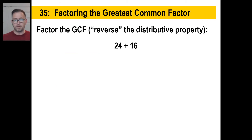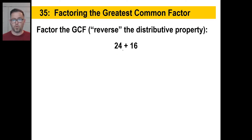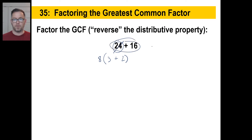Let's look at 24 plus 16. What's the biggest thing you can pull out of both? The answer is eight. Pull out the eight, then 24 divided by eight is three, and 16 divided by eight is two. So we get 8 times (3 + 2), which is 8 times 5, which equals 40. That is what we need by factoring the GCF.